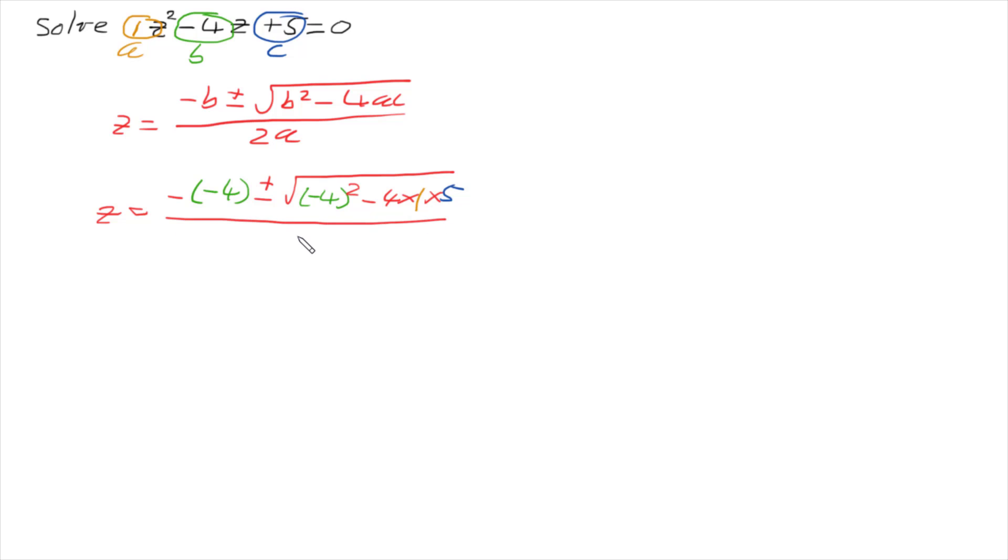All divided by 2 times whatever a is, so 2 times 1. So sorting this out, we get z is going to be 4 plus or minus the square root of 16 take 4 times 1 times 5 is 20 all over 2.